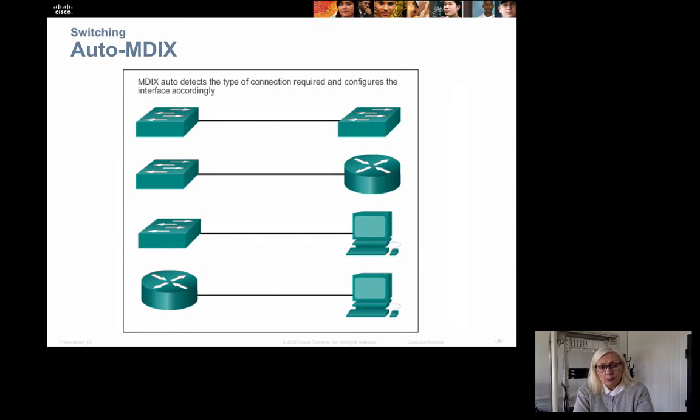We can also set up the switch ports to be auto MDIX which means that they will actually find out what is connected to the other side. If this is configured we don't really need to think about whether we have a crossed cable or a normal straight through cable between the switches because they will configure themselves according to what we put in. And most newer switches can be set up with auto MDIX.